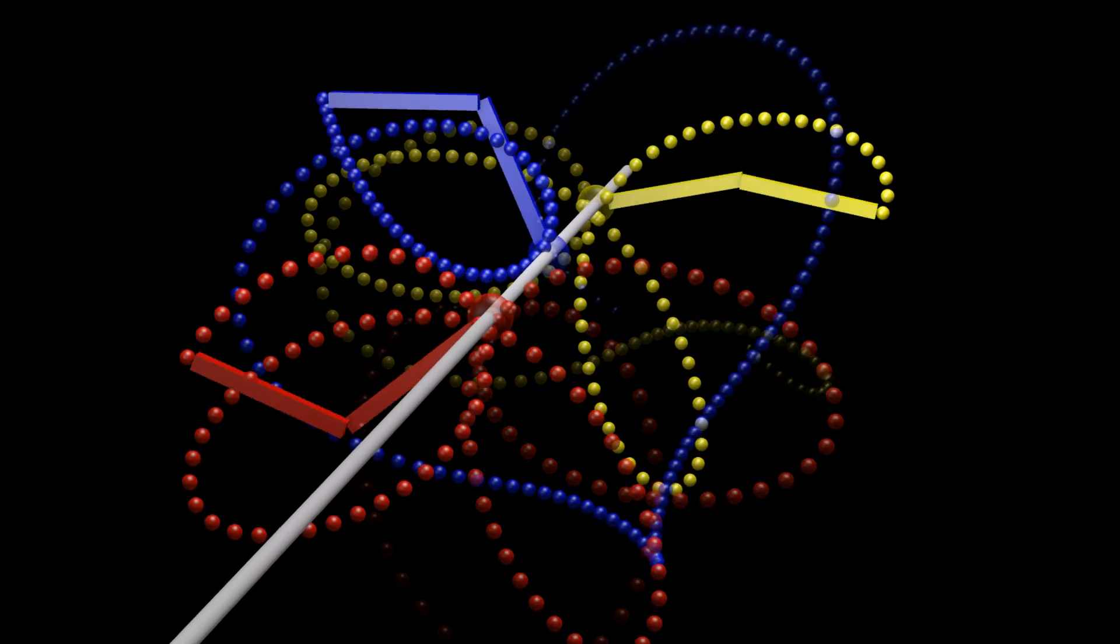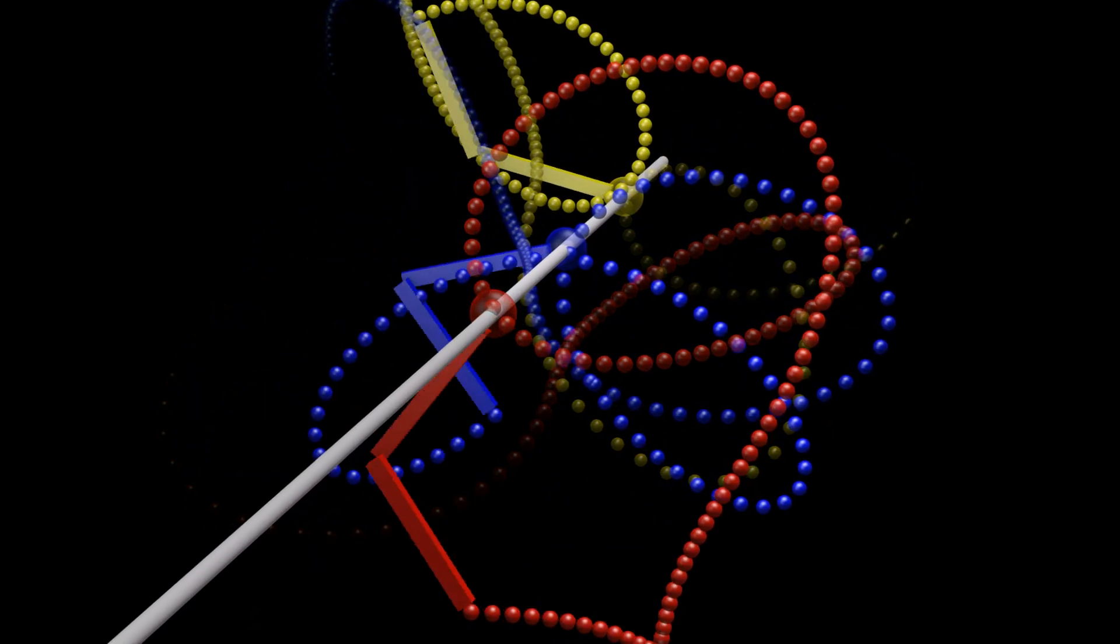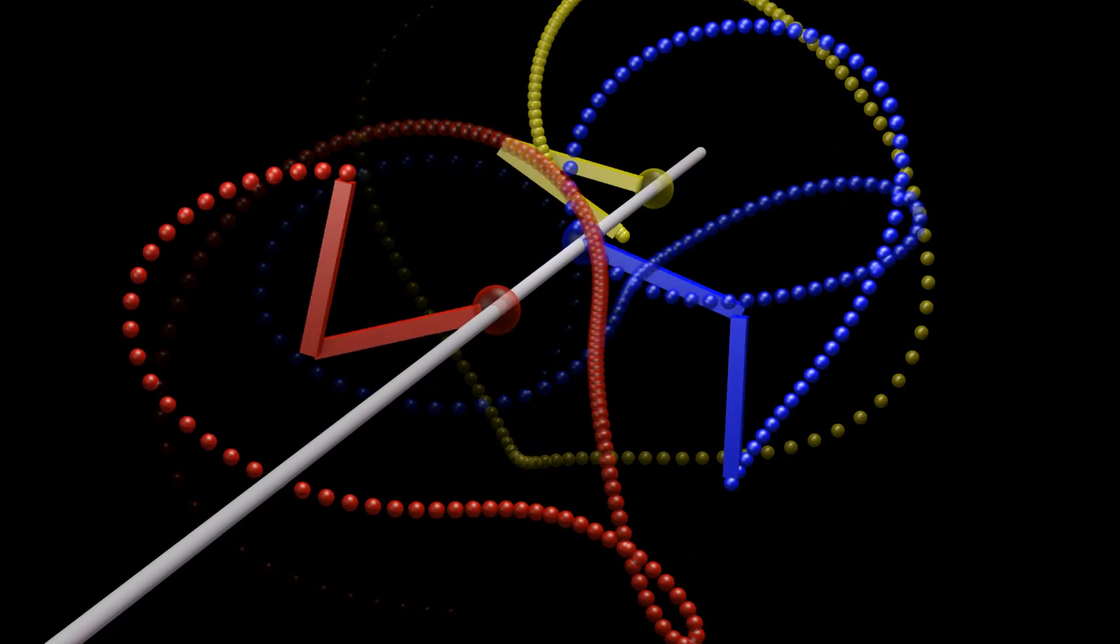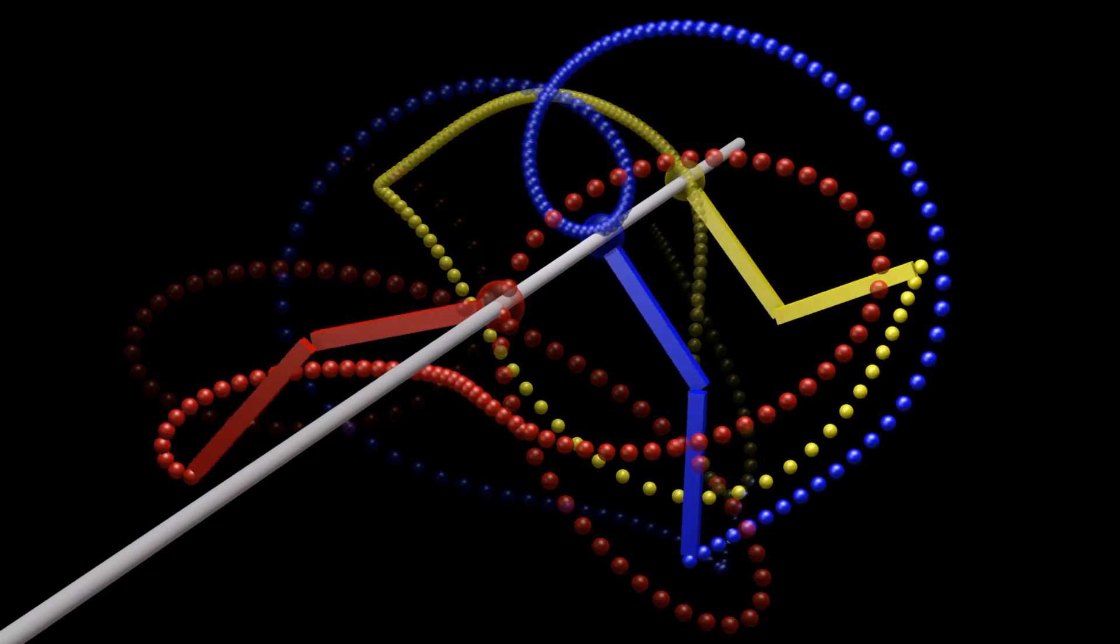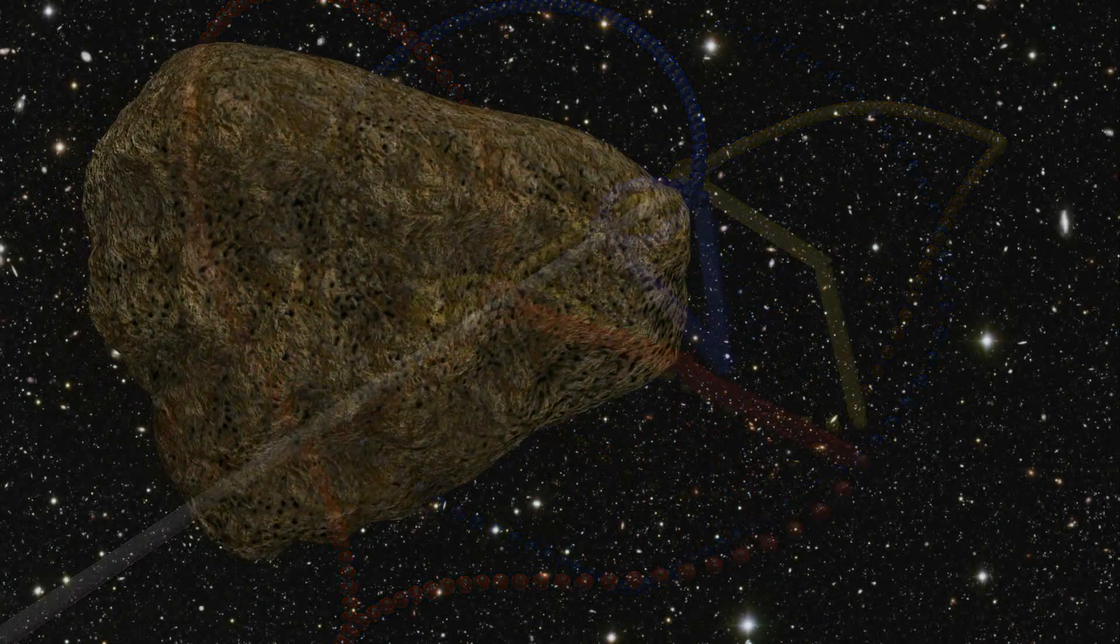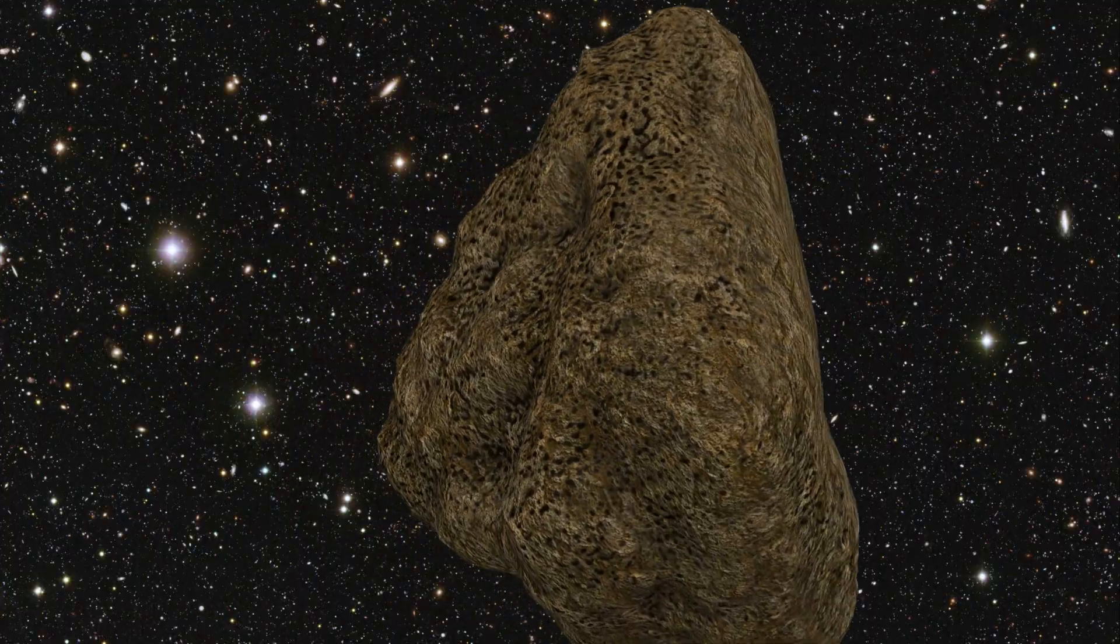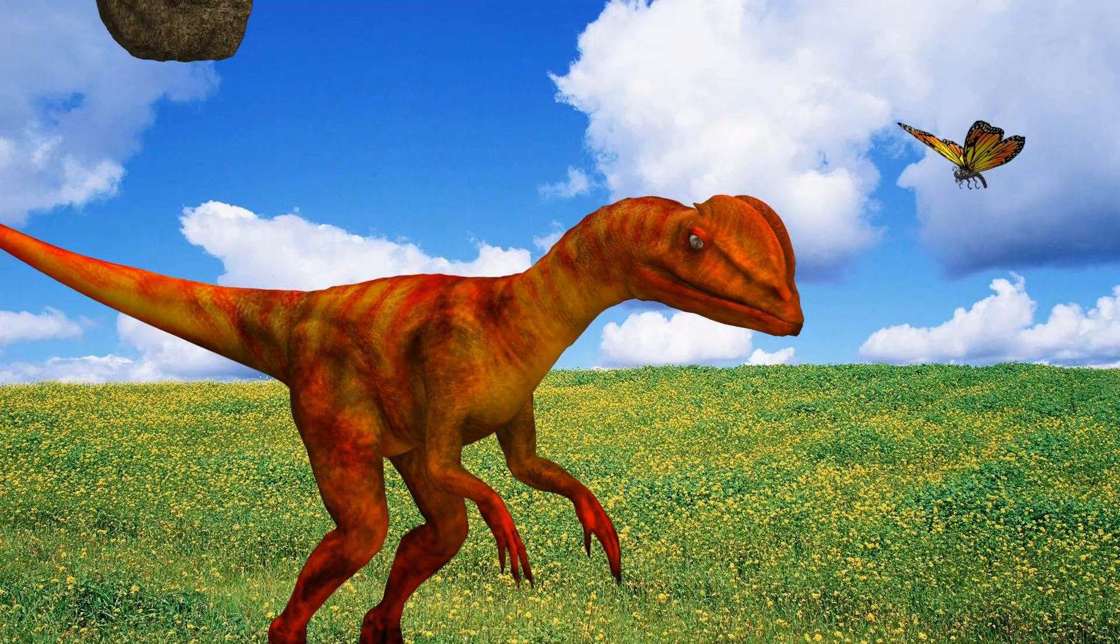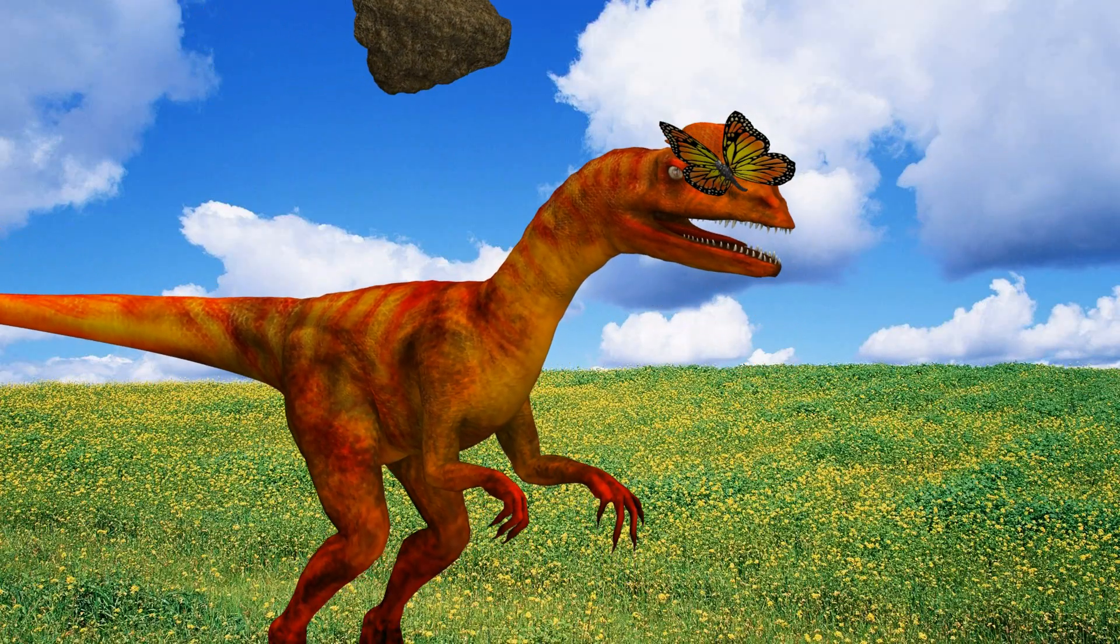The same is true for the trajectory of the evolution of all life on Earth. If a key random mutation had not happened, or if it had happened slightly differently, the organisms alive today could be very different from the ones we are familiar with. Most importantly, the difference between an asteroid causing a mass extinction event versus missing the Earth altogether can be attributed to the tiniest imperceptible change in the angle of the asteroid's path when it is still far away.